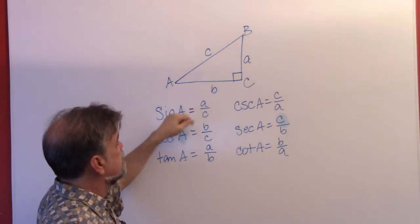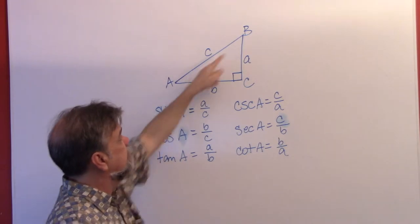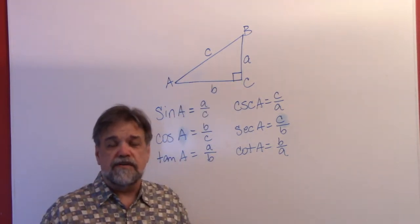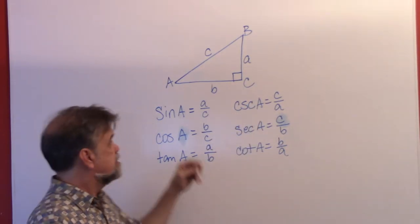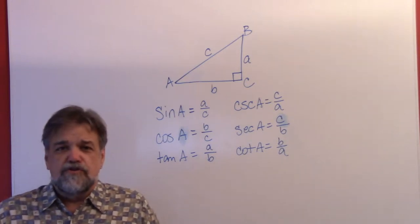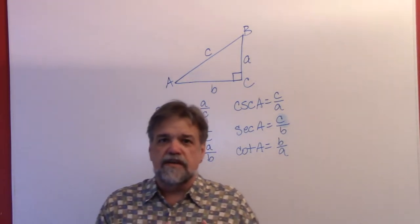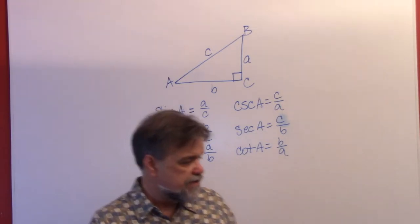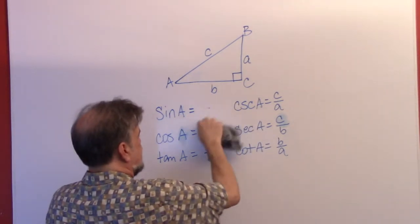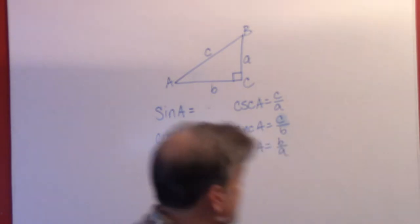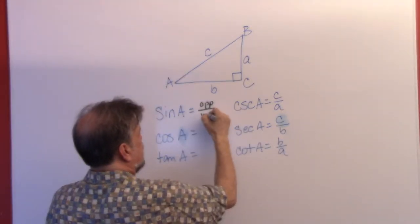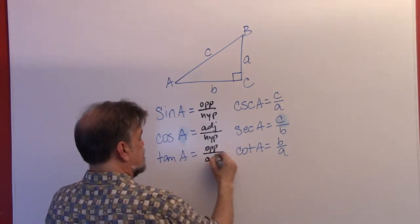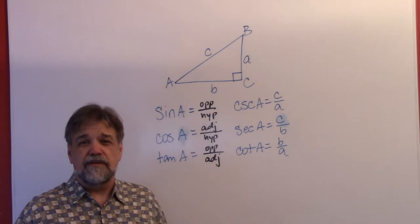So, sine of A is a over c. The cosine of A is b over c — this side over the hypotenuse. And the tangent of A is this side divided by this side; we're not using the hypotenuse when calculating the tangent. Let's focus on sine, cosine, and tangent. Usually, we don't think of these as A, B, C — we think of them as the opposite side, the adjacent side, the hypotenuse. So instead of saying a over c and b over c and a over b, what I'm going to say is: opposite over hypotenuse, adjacent over hypotenuse, and opposite over adjacent.